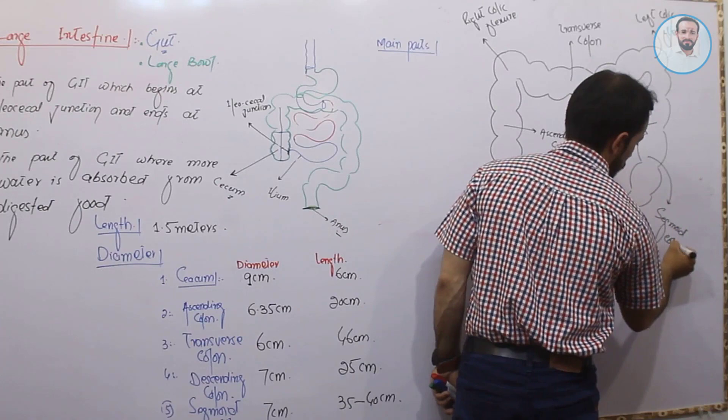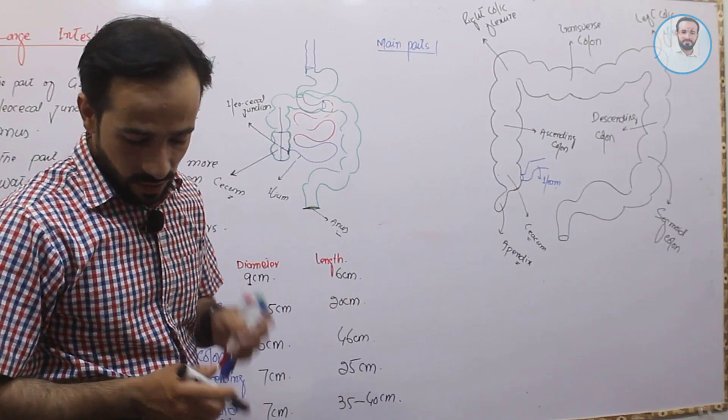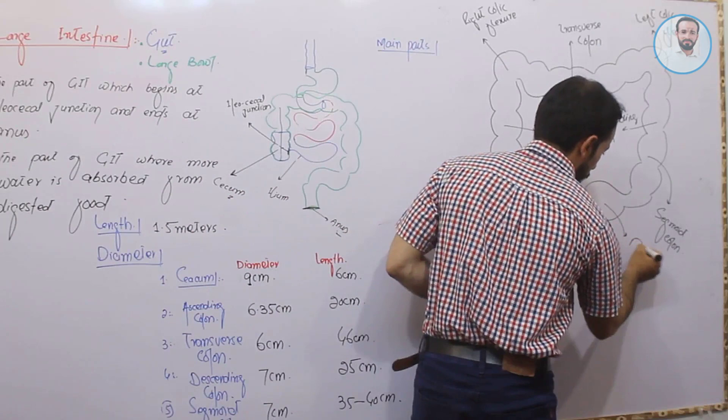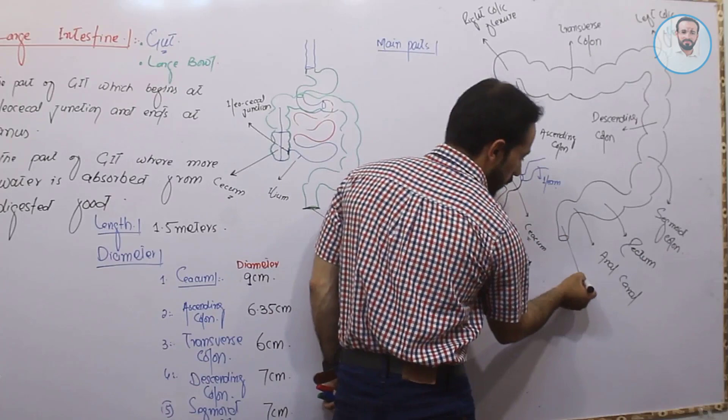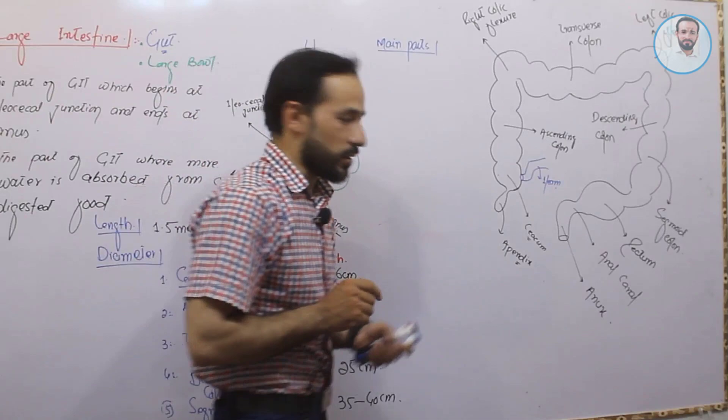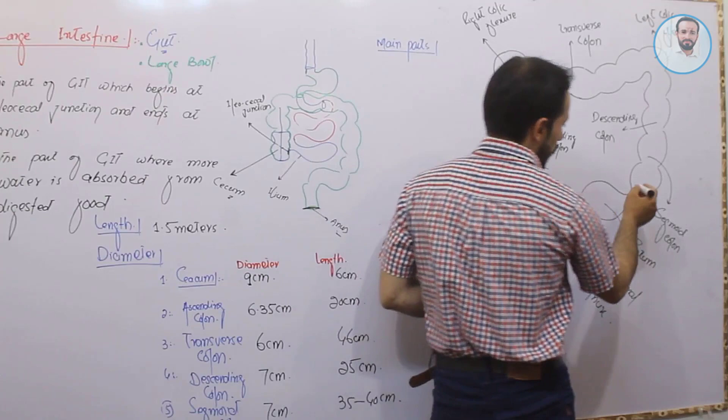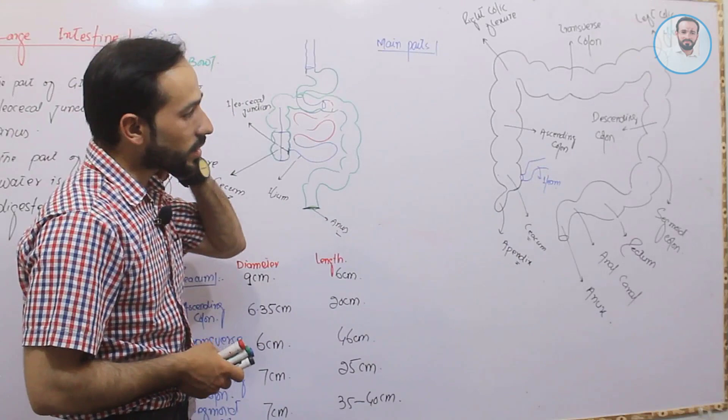After the descending colon is the sigmoid colon, then the rectum, then the anal canal, and finally the external opening called the anus. Between the rectum and sigmoid colon there is also the sigmoid flexure.